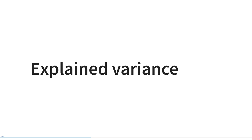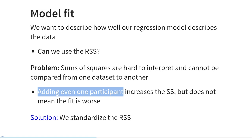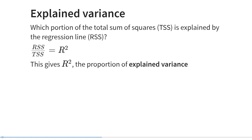The next topic is explained variance — basically a way to standardize the regression sum of squares. This relates to the question of model fit. Sums of squares are difficult to interpret and cannot be straightforwardly compared across data sets; adding even one participant increases the sum of squares without necessarily meaning the model fit is worse. The solution is to standardize the regression sum of squares by calculating its ratio to the total sum of squares — this standardization procedure is called explained variance, answering the question: which portion of the total sum of squares is explained by the regression line?